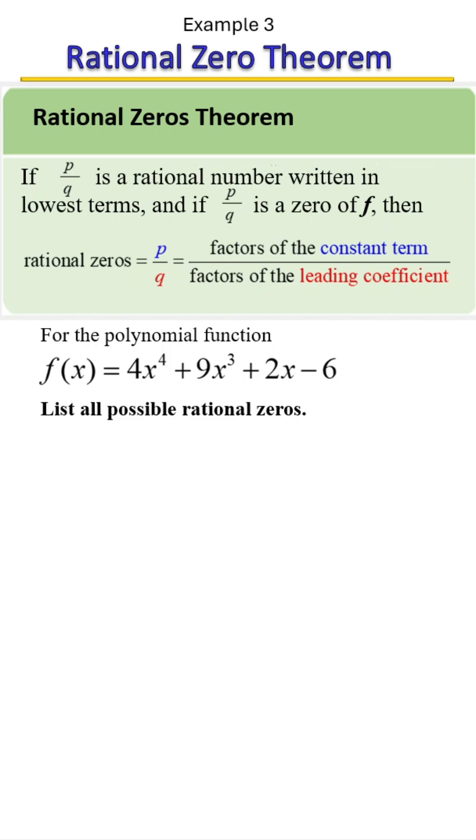Step one is to identify P and Q. P here would be your factors of the constant term. The constant term is the back end term, in this case it would be the negative six. And then you have on the bottom which would be Q. That would be factors of the leading coefficient. The leading term here is the one out front. Its coefficient is four. So the bottom you're going to have a four.